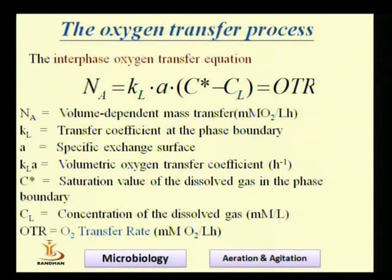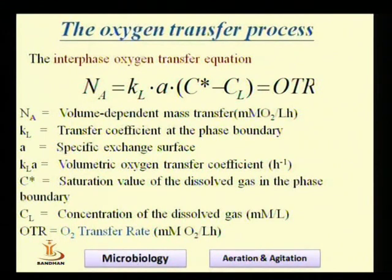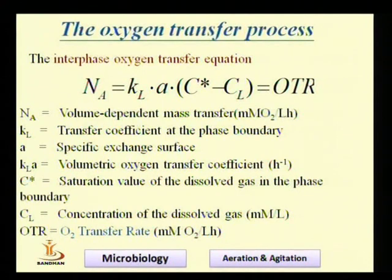The overall oxygen transfer rate (OTR) is described by the equation: OTR = kL · a · (C* − CL), where kL is the mass transfer coefficient of the liquid film, a is the specific exchange area involved in oxygen transfer at the liquid film, C* is the saturation concentration of dissolved oxygen, and CL is the concentration of oxygen in the liquid medium.